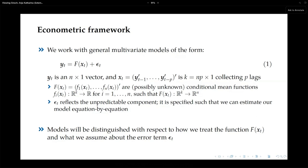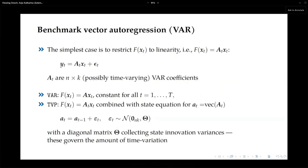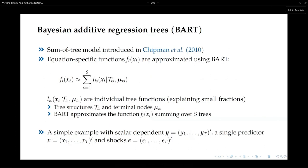We consider several specifications for f. The simplest is a linear f, giving a Bayesian VAR with global-local shrinkage priors as our benchmark. We also consider a version with time variation in all coefficients evolving as random walks, similar to the original work by Giorgio Primiceri — this is flexible but keeps the parameterization relatively small.